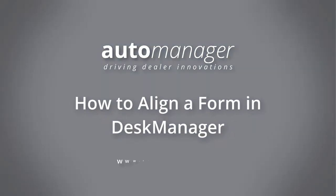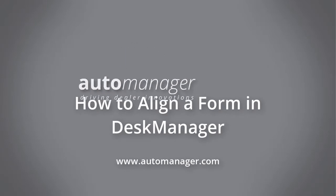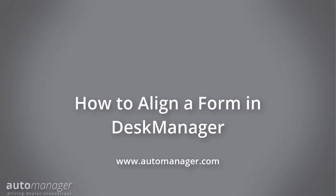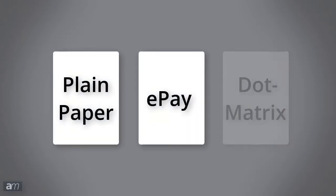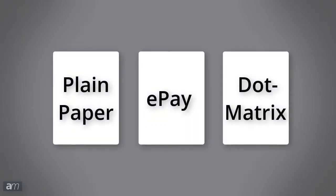In this video, we will cover how to align a form in DeskManager. There are three types of forms that can be printed: plain paper and epay for normal printers, and dot matrix forms for Okidata printers.